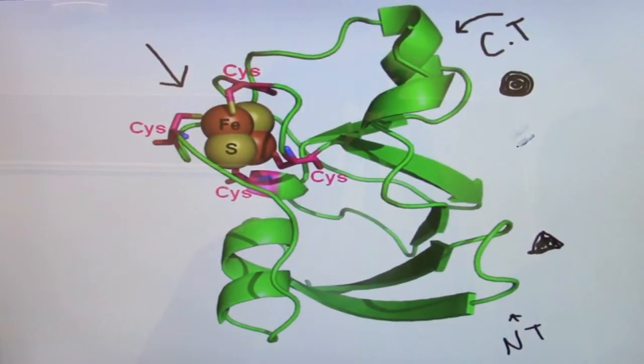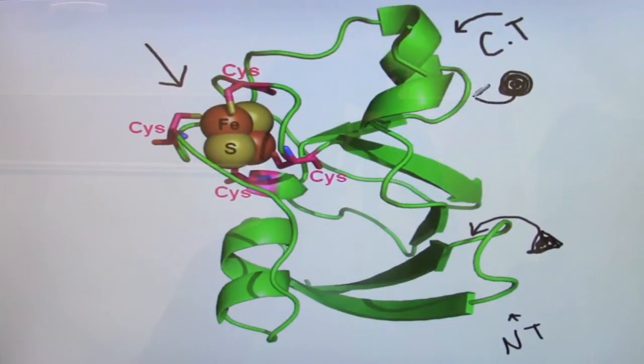Upon binding of the FAD cofactor to the N-terminus and the NADP+ to the C-terminus, the entire ferrodoxin protein will undergo a conformational change.